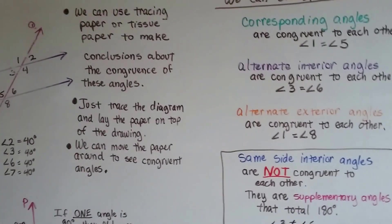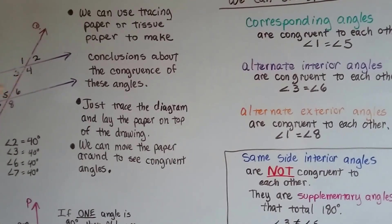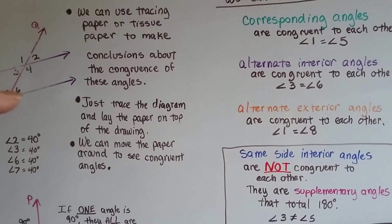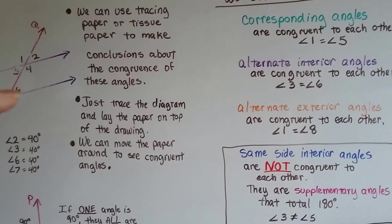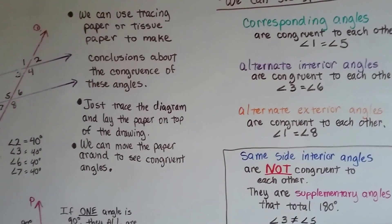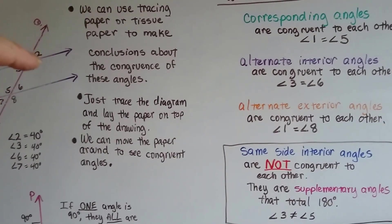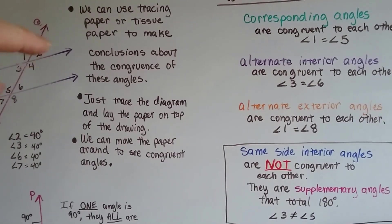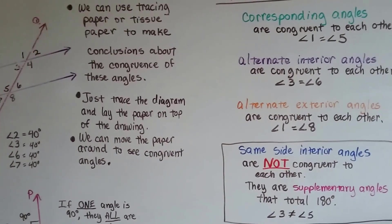And alternate interior angles. Keyword interior. So they're going to be on the inside of the parallel lines. So angles 3 and 6, because they're alternate, that means they're on opposite sides of the transversal. That line cutting through it. And then 4 and 5, I'm sorry, would be alternate interior ones, wouldn't they be?